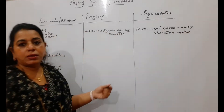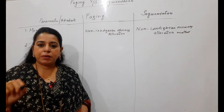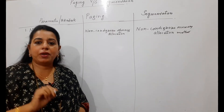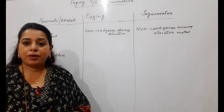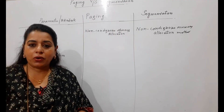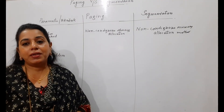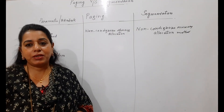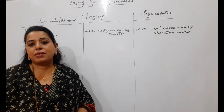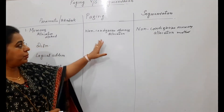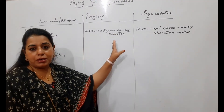In the very first chapter of memory management, I explained the types of memory allocation methods — contiguous and non-contiguous. In contiguous, you have fixed size partitioning and variable size partitioning. In non-contiguous, there are two different types: paging and segmentation.